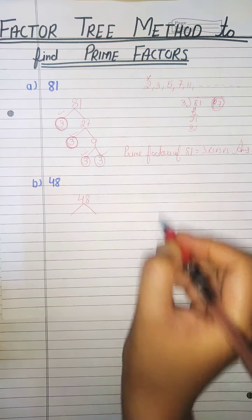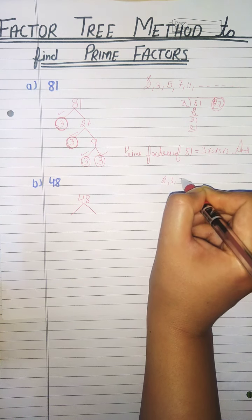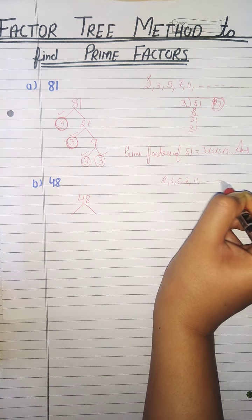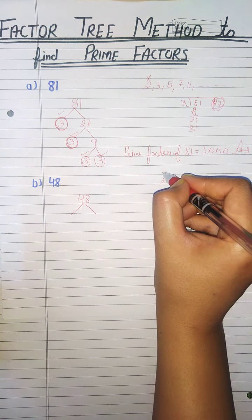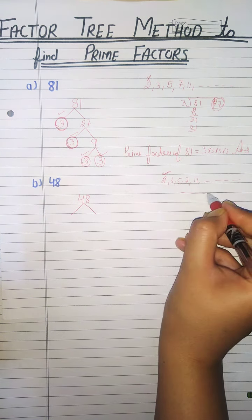Like this. Prime numbers: 2, 3, 5, 7, 11, and so on. 48 is an even number, so it is divisible by 2.